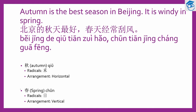The first new word is 秋. 秋 means autumn, or fall in some countries. This is the pinyin 秋, and the radical is on the left. The arrangement is horizontal. Let's look at how to write 秋: nine strokes for this word.